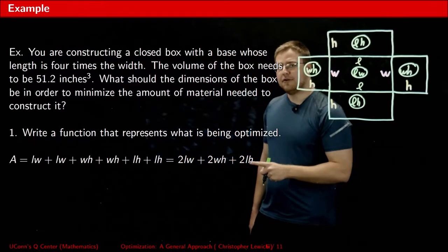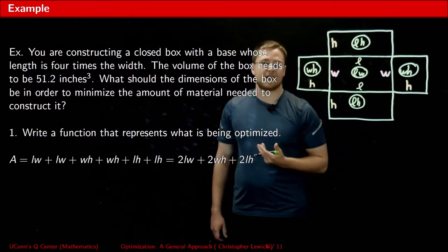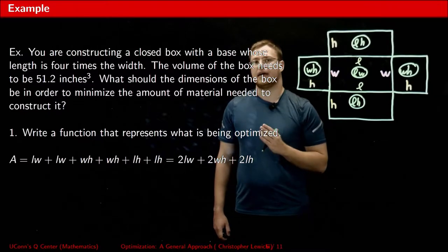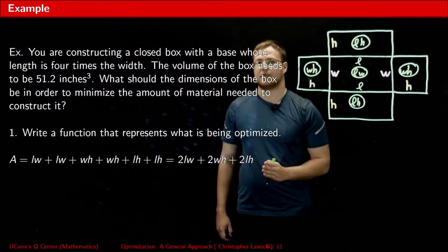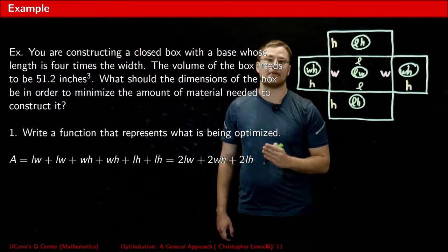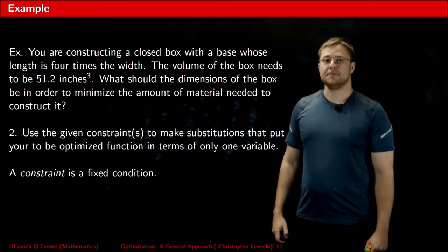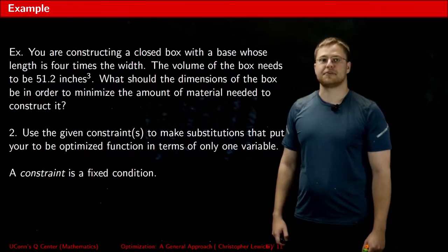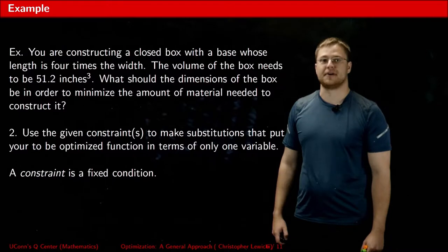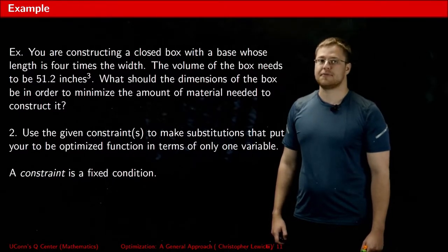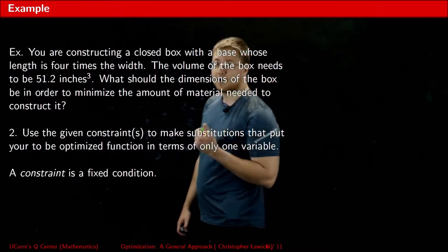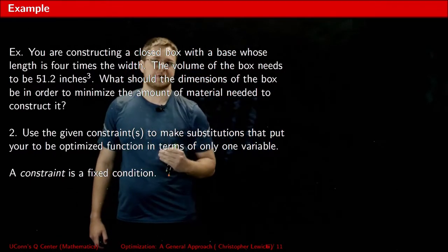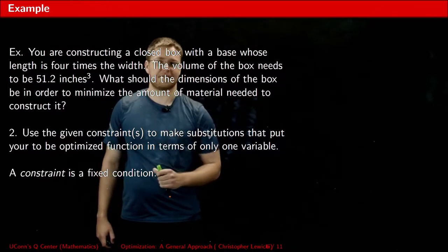Now this looks like a scary looking equation because we have three unknown variables. Thankfully, we have step number two, which is going to help us with rewriting this equation, so that instead of having three unknowns, we only have one unknown. What step number two says is to use the constraints given in the problem to help you rewrite your to be optimized function in terms of only one variable. A constraint is a fancy way of saying a fixed value. So the question we need to be able to answer is, as we read through this problem, what has to be true no matter what the dimensions of the box end up being?